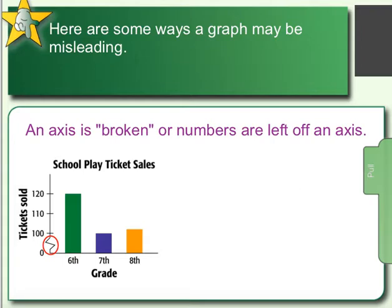In this case, we are looking at this part right here — they left off from 0 to 100 and they're only going up by 10s the rest of the time. Unfortunately, this kind of misrepresents the data because it makes it look like 6th grade has twice as many ticket sales as 8th grade and almost 3 times as much as 7th grade. It tries to show that 6th grade has a ton more ticket sales, when in reality they really don't — maybe 15 more than 8th grade and a little bit less than 20 more than 7th grade.